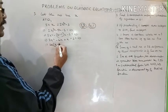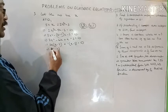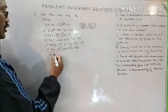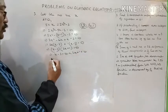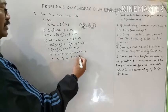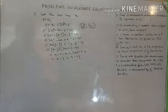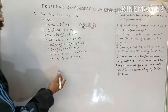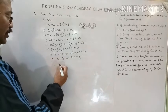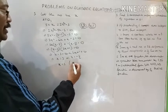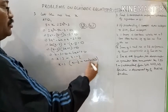Taking 2x common: 2x(x minus 3), then plus 1 common: plus 1(x minus 3) equals 0. So (x minus 3)(2x plus 1) equals 0. Applying zero product rule: x minus 3 equals 0 or 2x plus 1 equals 0, giving x equals 3 or x equals minus 1/2.